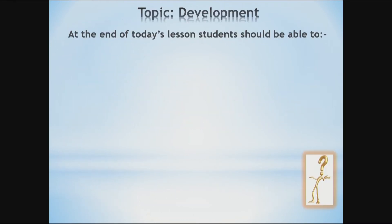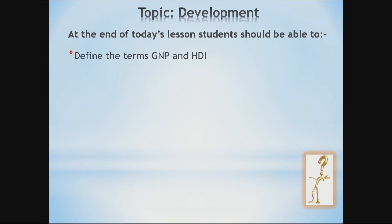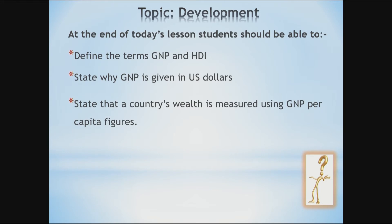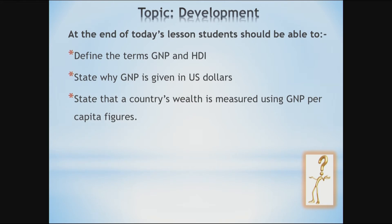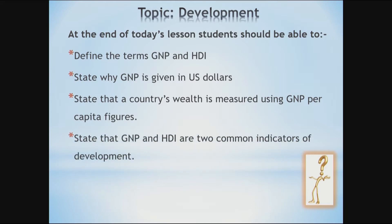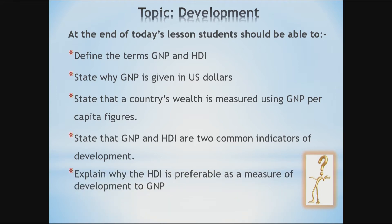At the end of this lesson, you should be able to define the terms GNP and HDI; state why GNP is given in US dollars; state that a country's wealth is measured using GNP per capita figures; state that GNP and HDI are two common indicators of development; and finally, explain why the HDI is preferable as a measure of development to GNP.